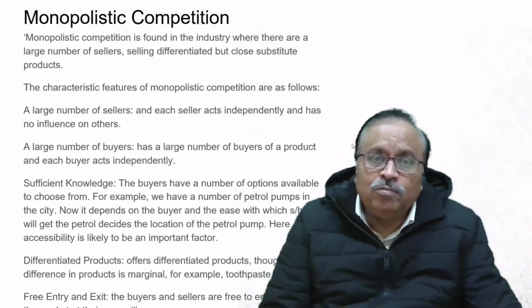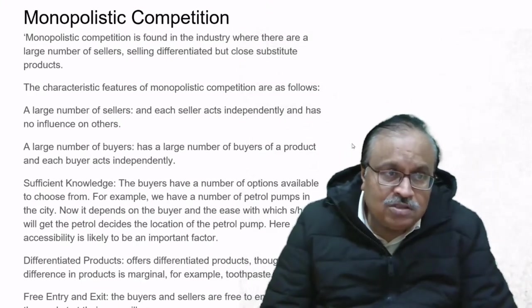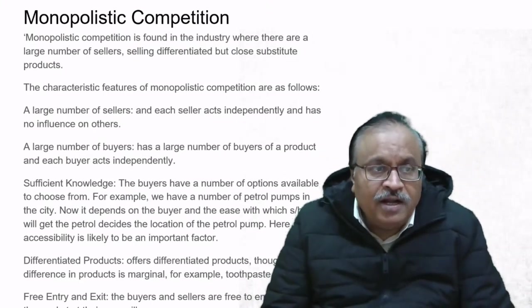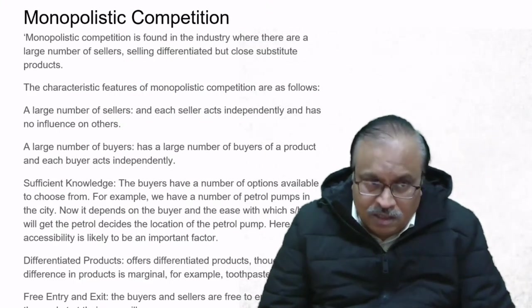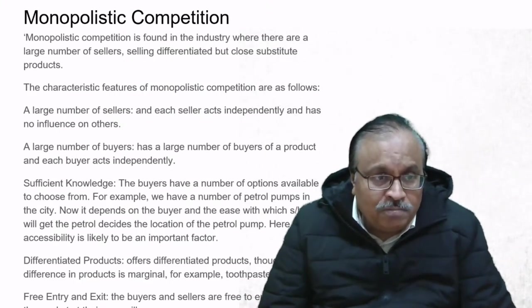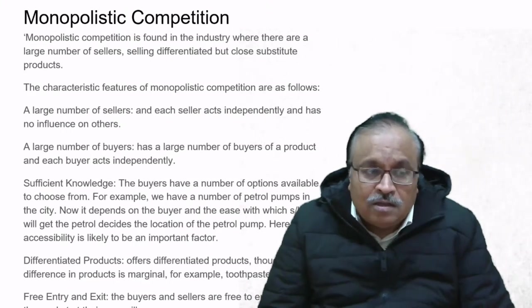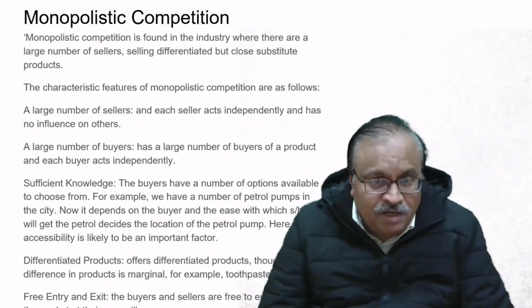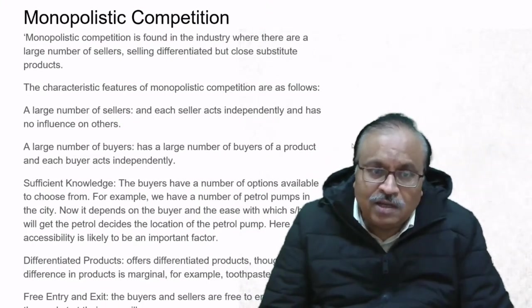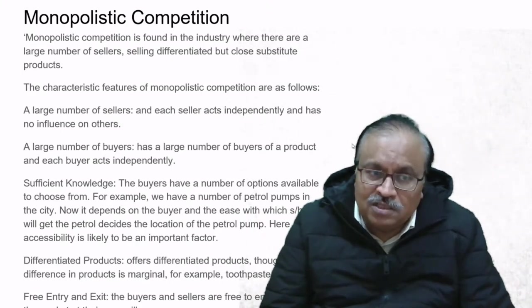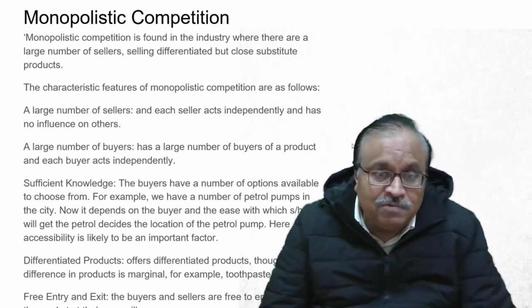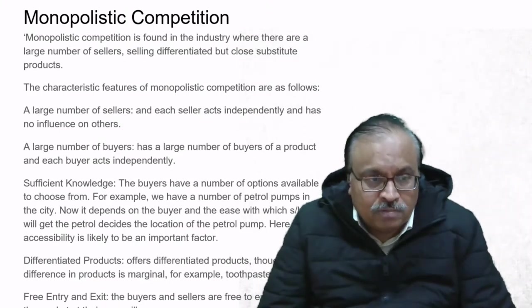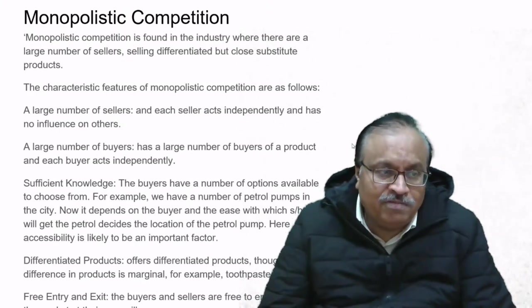The characteristic features of monopolistic competition are: a large number of sellers, each seller acts independently with no influence on others, a large number of buyers, each buyer acts independently, and sufficient knowledge—buyers have a number of options to choose from. For example, we have a number of petrol pumps in a city; which one the buyer chooses depends on accessibility, which is likely to be an important factor.